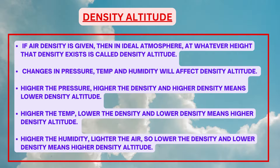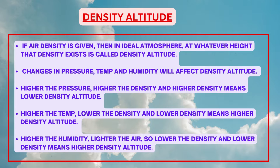Density altitude: in an ideal atmosphere, every height has a specific density which reduces as we go upwards. If air density is given, the height in the ideal atmosphere at which that density exists is called density altitude. Changes in pressure, temperature, and humidity all affect density altitude. Higher pressure means higher density and lower density altitude. Higher temperature means lower density and higher density altitude. Higher humidity means lighter air, lower density, and higher density altitude.